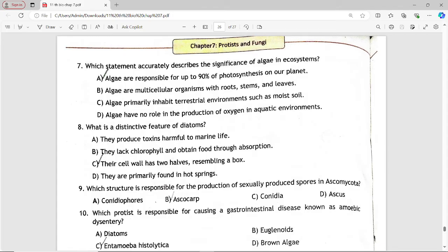Next MCQ: What is a distinctive feature of diatoms? Options are: they produce toxins harmful to marine life; they lack chlorophyll and obtain food through absorption; their cell wall has two halves resembling a box; they are primarily found in hot springs. Answer is option C: their cell wall has two halves resembling a box.